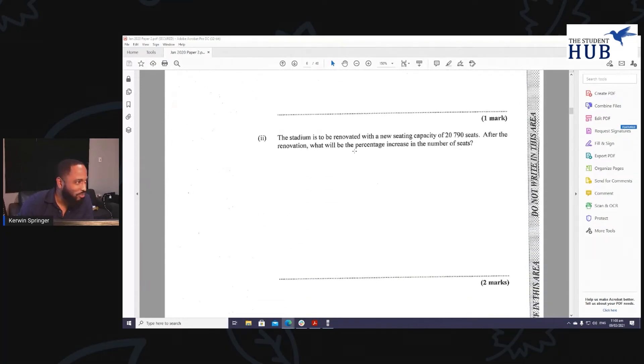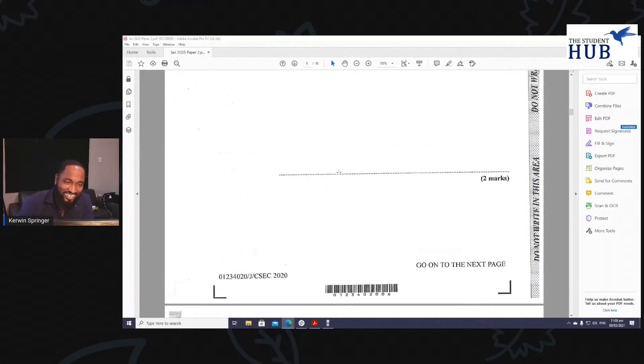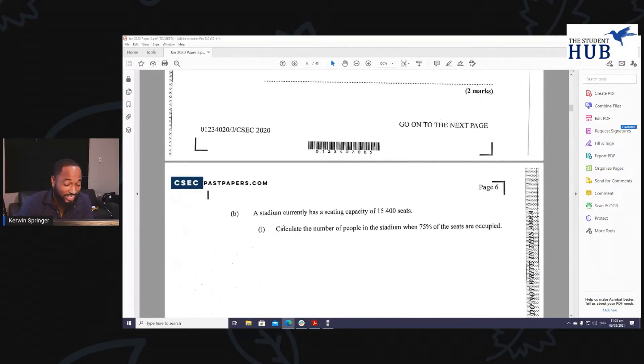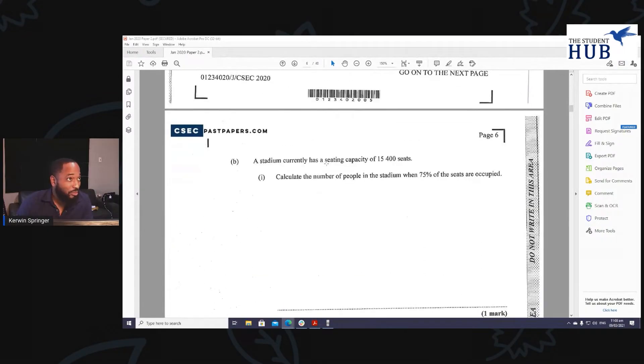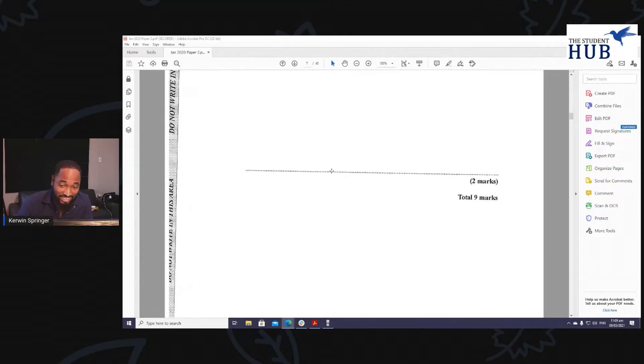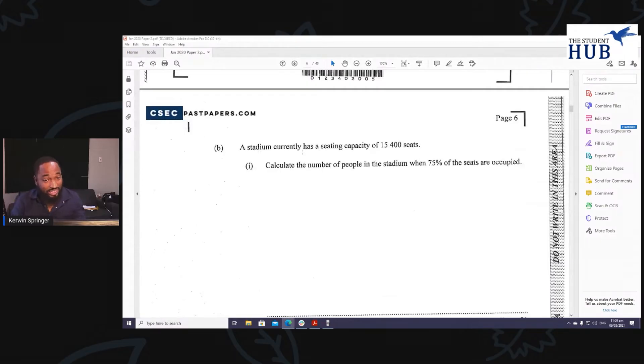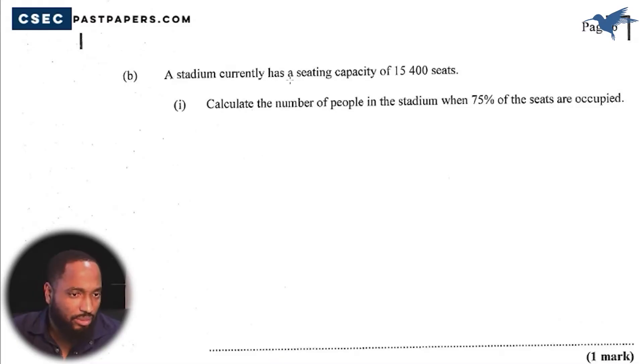Normally the last part of question one is consumer arithmetic and that has been so for time immemorial, but in this paper it was decided that there would be no consumer arithmetic in this part of the question. Very interesting. However, consumer arithmetic techniques were still tested, so we're going to have a look at this and see what we can do.